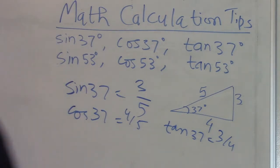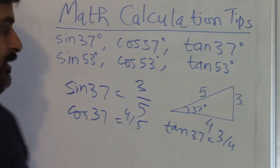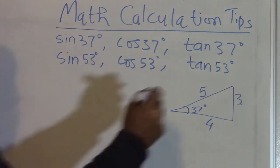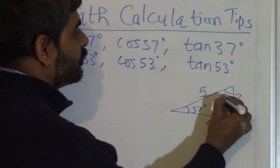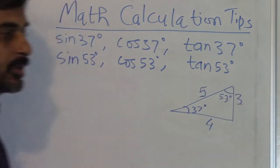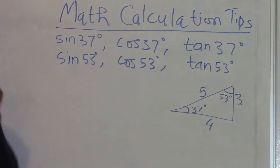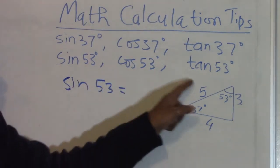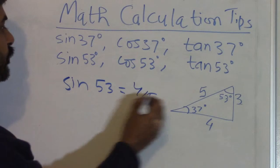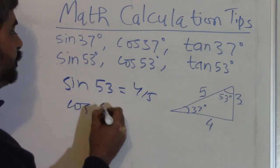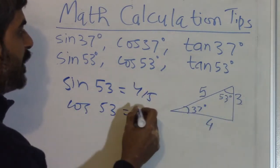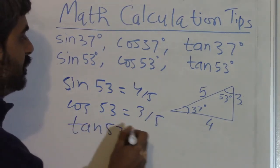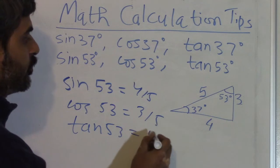And in the same way, you need to write sine, cosine, and tangent of 53. Make this angle 53 because 37 plus 53 is 90. So sin 53° will be equal to 4 by 5, cos 53° is equal to 3 by 5, and finally tan 53° is equal to 4 by 3.